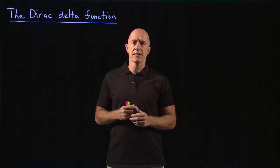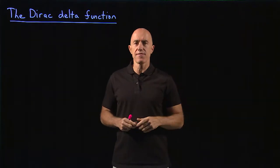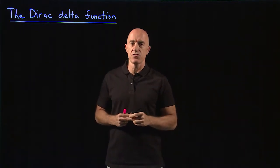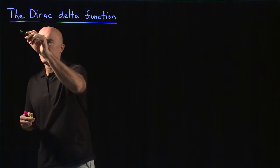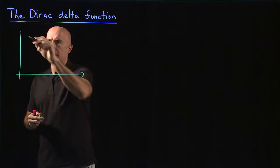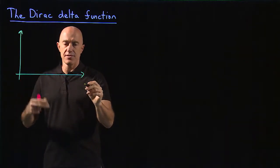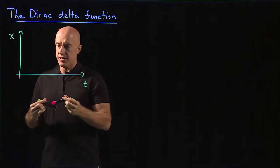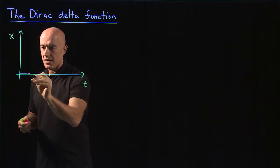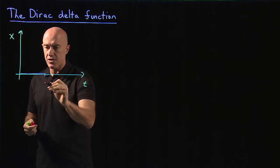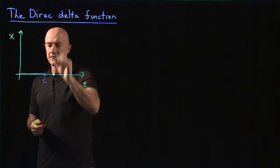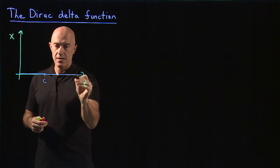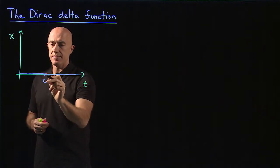What is this Dirac delta function? It's not actually a function, but it's a limit of a function. The easiest way to understand this is to draw a graph. The Dirac delta function, on a graph of x versus t, is a function which is zero until it gets to a point we can call c, and then it's infinite, and then it's zero again. Infinite, you would draw like a straight line here.